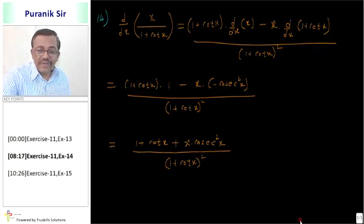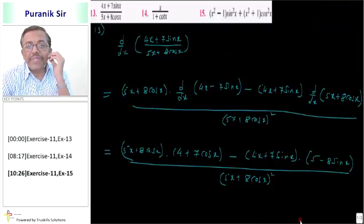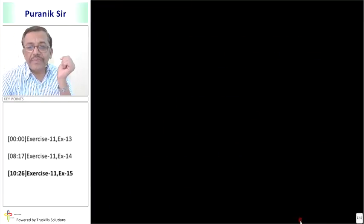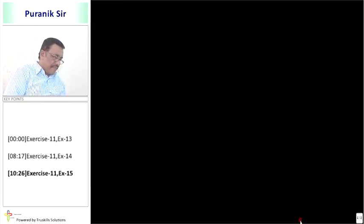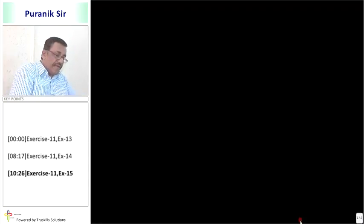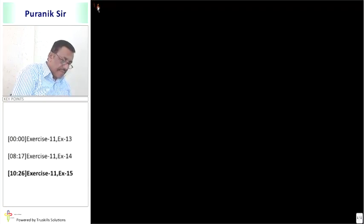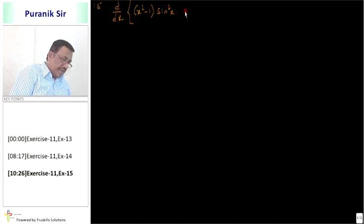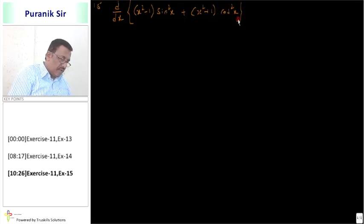This is your final answer. Problem number 14, then problem number 15: find d by dx of (x² − 1) sin²x + (x² + 1) cos²x.